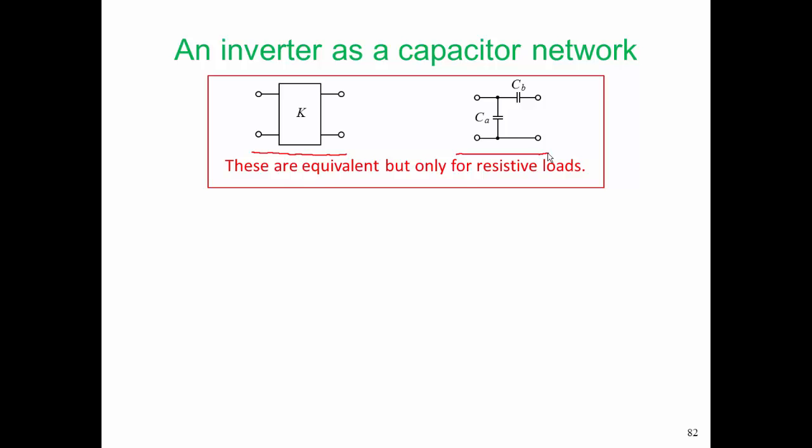But our inverter now, the one at the input and also the inverter at the output, they're in a special category. They see 50 ohms on one side, and looking into the core of the filter, they see 389 ohms.